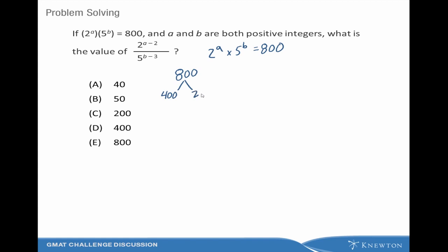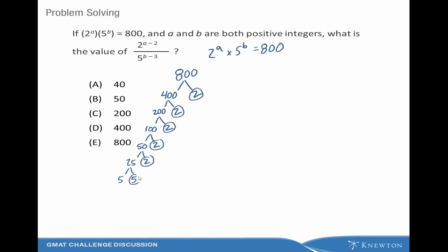If we do this, we see that 800 breaks down into 400 times 2, then 200 times 2, then 100 times 2, then 50 times 2, and 50 becomes 25 times 2. The 25 is just fine. So we count up our prime factors and we see that there are a total of five 2s and a total of two 5s, so it's 2 to the 5th times 5 squared equals 800.